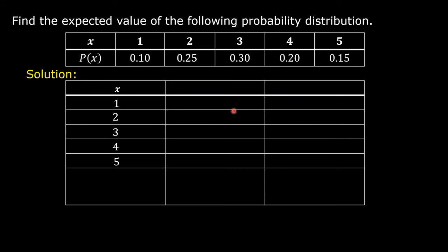In the second column, write the corresponding probabilities: 0.10 for 1, 0.25 for 2, 0.30 for 3, 0.20 for 4, and 0.15 for 5.